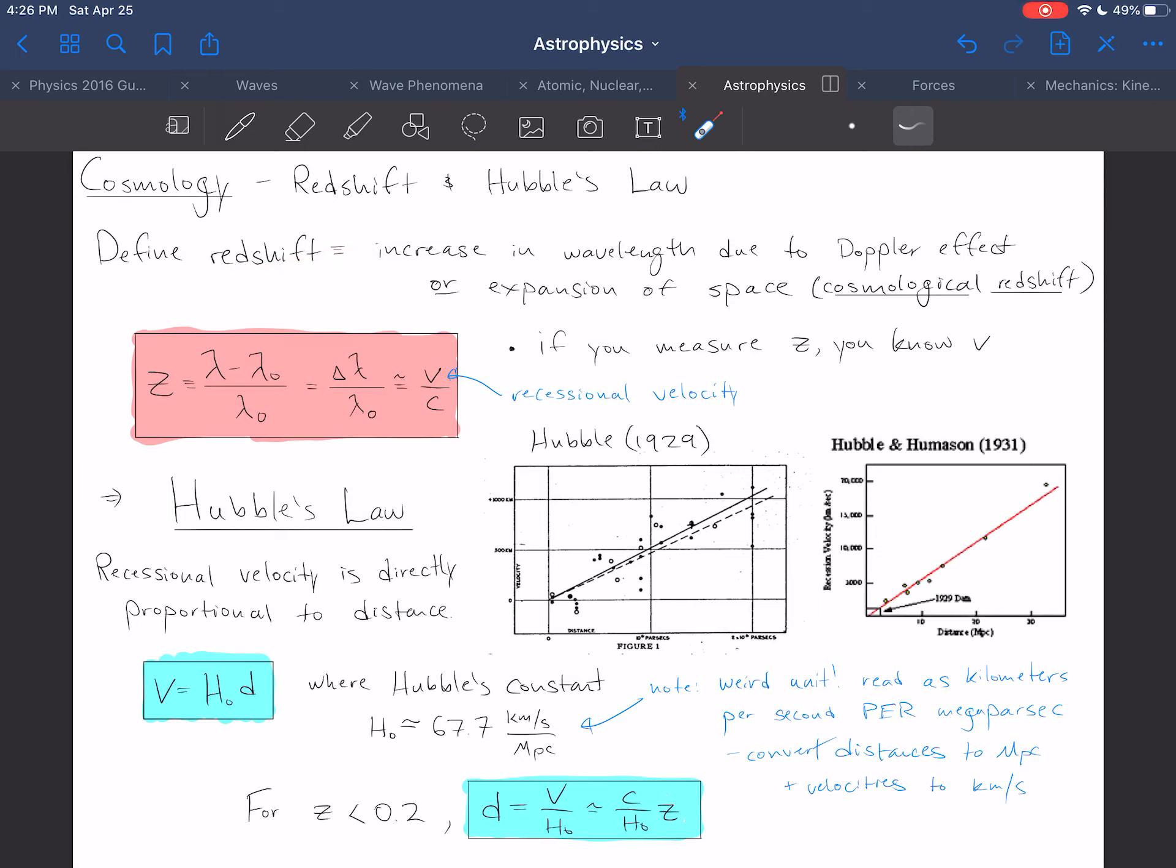The general idea then is we define the redshift z as the deviation from the emitted wavelength, so whatever the lambda is that you measure, minus the emitted wavelength, divided by the emitted wavelength, or delta lambda over lambda naught. And that, as it turns out, is proportional to the velocity, or the recessional radial velocity, so how fast it's moving away from us. And so if you measure the redshift, you know the velocity.